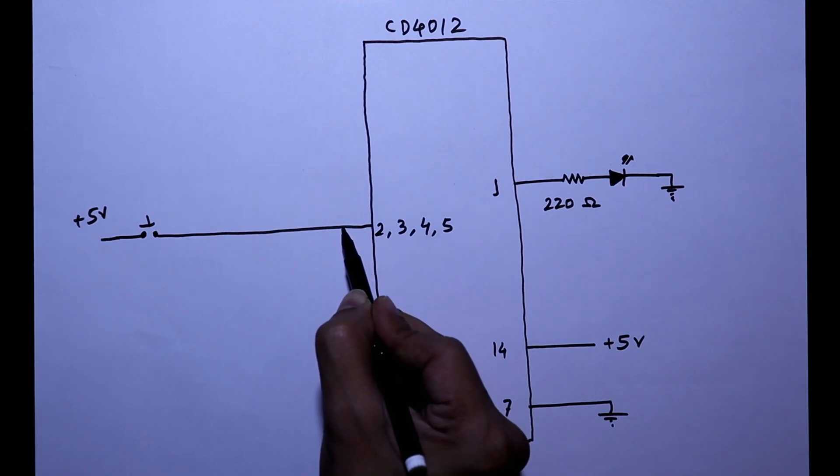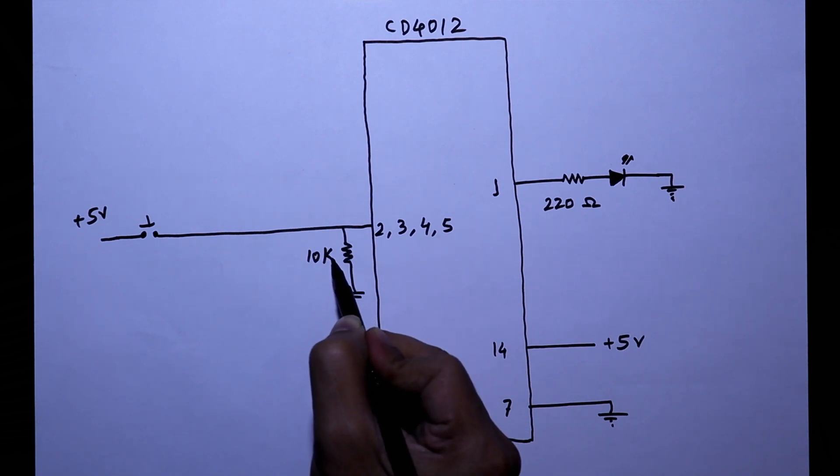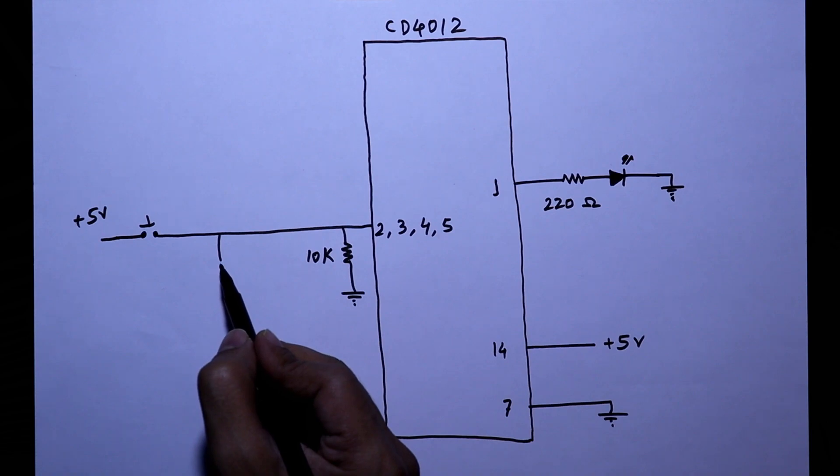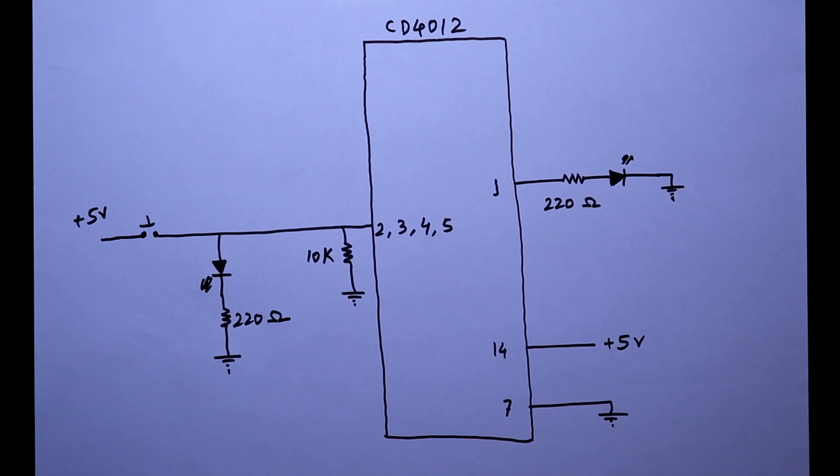And with the input pins, we have to connect pull-down resistor. The value is 10 kilo ohms. And to see the inputs, we have to connect input LEDs. So this is the circuit. Now we will see this thing in the breadboard.